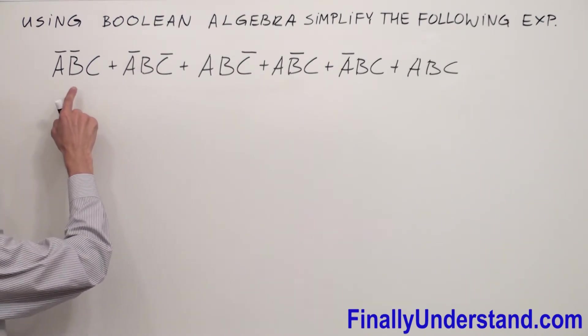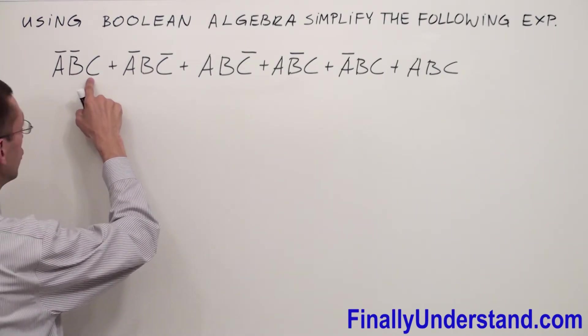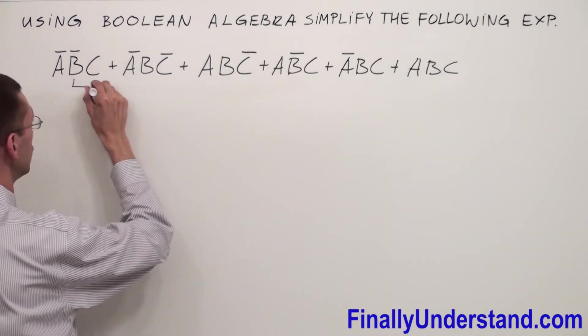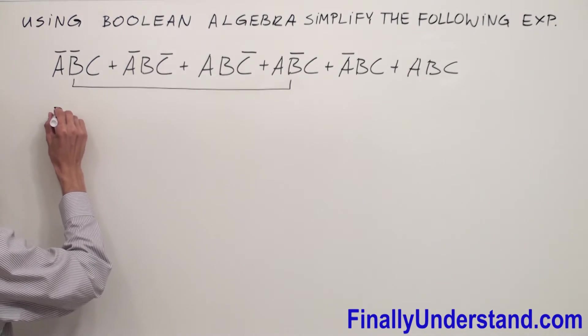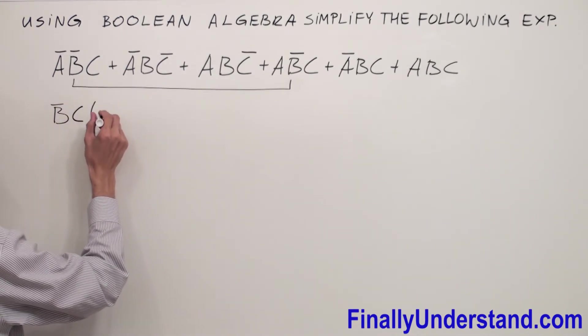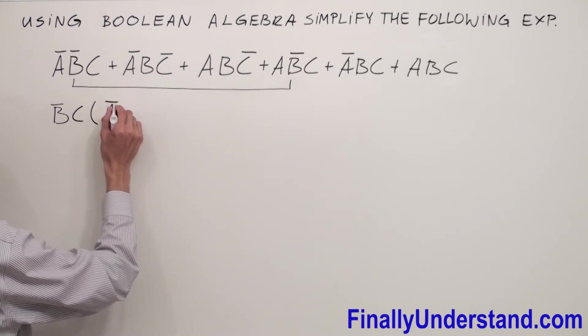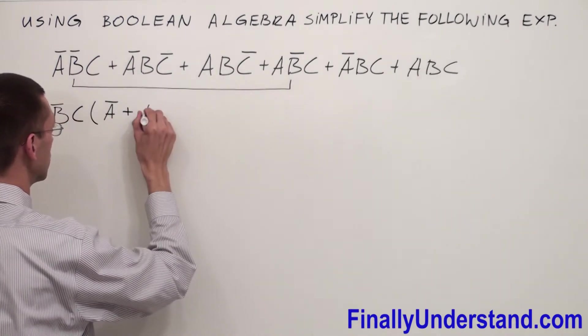If you look at this example, we have B̄ and C. Another term which has B̄ and C is over here. So I'm going to use these two terms to factorize two variables B̄ and C. And the third one is supposed to write inside of the parentheses. In this case, it's going to be Ā from this term or A from this term.